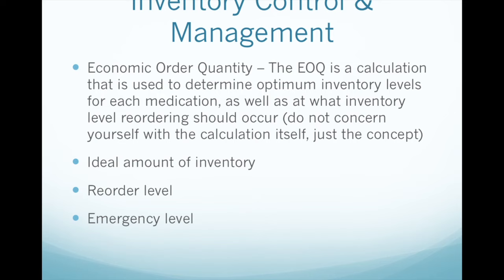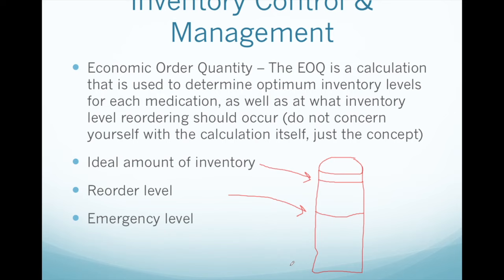I drew a funnel or test tube with different levels. The ideal amount of inventory is this top line — this is where you always want to be. The reorder level is the middle line — when medication reaches this point, you reorder. The emergency level is the bottom line. Sometimes medication goes out a lot quicker than anticipated and it doesn't give you time to hit the reorder level, jumping straight to the emergency level.